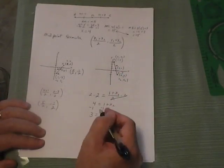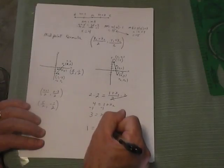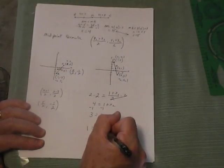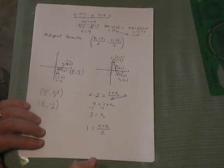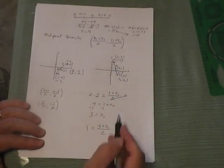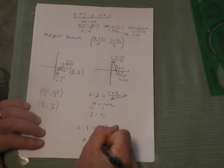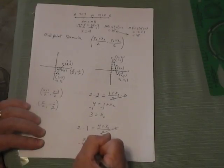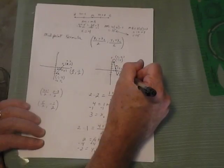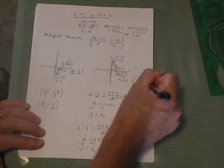Then we do the same thing with the Y values. The midpoint's Y coordinate is 1, so 1 equals (4 plus Y sub 2) over 2. Multiplying both sides by 2 gives 2 equals 4 plus Y sub 2. Subtracting 4, Y sub 2 equals negative 2. So the unknown endpoint has coordinates (3, negative 2).